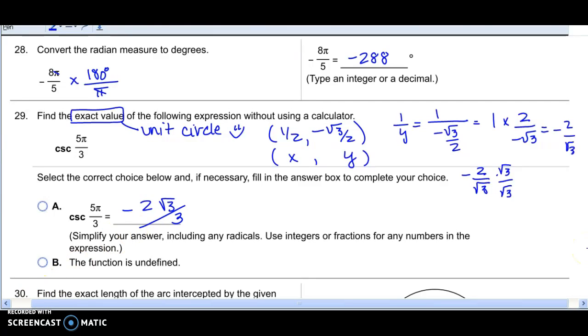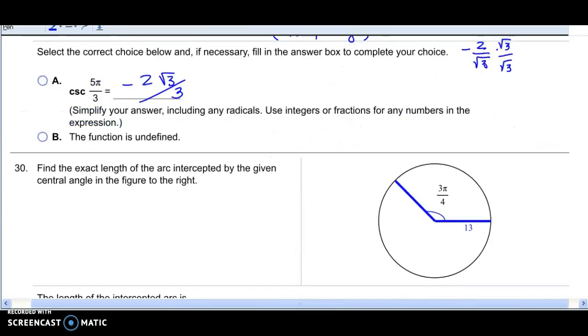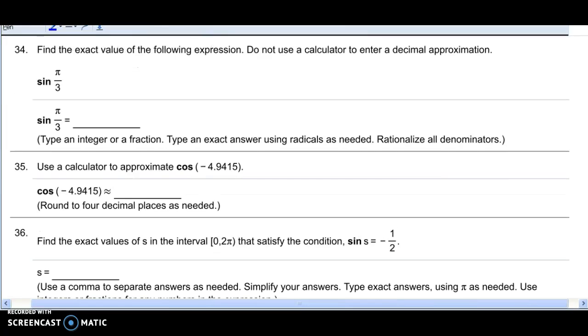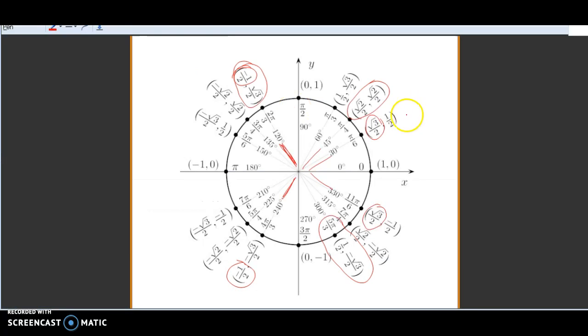Let's jump down now to problem 34 because I told you to skip some. It says exact value of the following. That tells me Mr. Unit Circle. So I'll go find π over 3 on my unit circle and find the sine of π over 3. Remember that the sine is the y-coordinate. So where is π over 3? Here's π over 3. The sine is the y-coordinate, so it's just the square root of 3 over 2. That was easy.